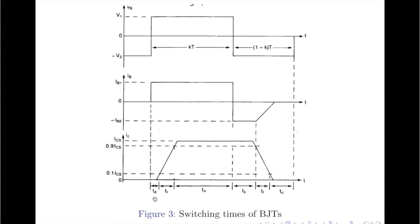The delay time td is the time used by the BJT to charge the base-to-emitter junction from 0 volts to the threshold voltage of approximately 0.7 volts. It is also defined as the time between the application of the base voltage and the time at which the collector current reaches 10 percent of its steady state value, represented by 0.1 ICs.